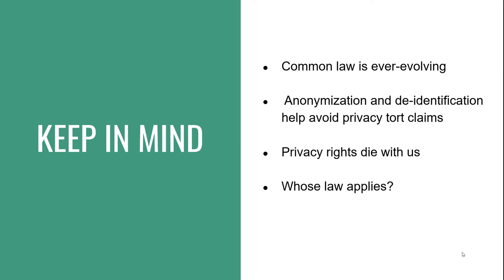As a practical matter, we can't keep track of dynamic tort laws in 50 states. It helps that state privacy tort standards are roughly similar. It also helps to begin thinking not just about law, but about ethics and norms. Because after all, the law — especially tort law — is supposed to reflect what the community thinks is right about how we should treat one another.